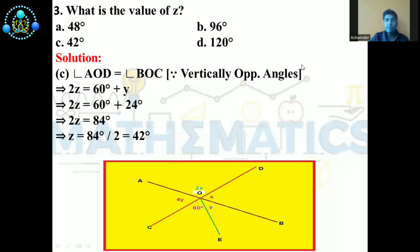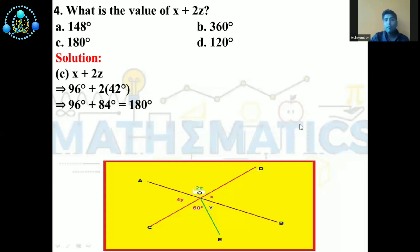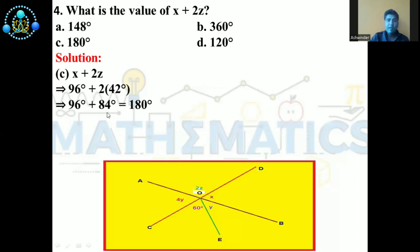Now we discuss the next question: What is the value of X plus 2Z? The four options are A: 148°, B: 360°, C: 180°, D: 120°. The correct answer is C. We know X equals 96° and Z equals 42°. So 2 into 42° equals 84°, and 96° plus 84° equals 180°. So the correct answer is C.